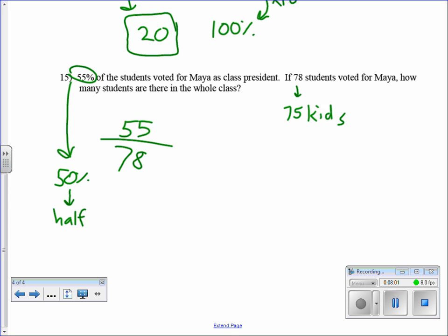Well, 55 is very close to 50. 50 is half, so I'll just round this down a little bit. 75 kids would be about 50. So if 75 kids is 50, then 150 kids is 100. And that's what they want us to find: what's 100?